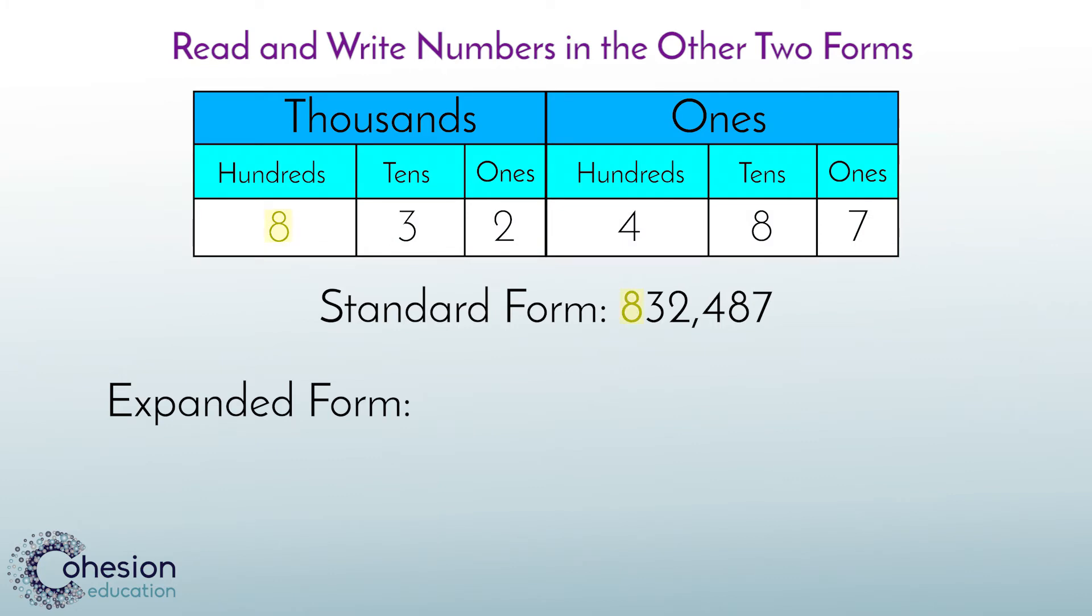8 is in the 100,000th place, making 800,000. 3 is in the 10,000th place, making 30,000. And then 2000 plus 400 plus 80 plus 7.